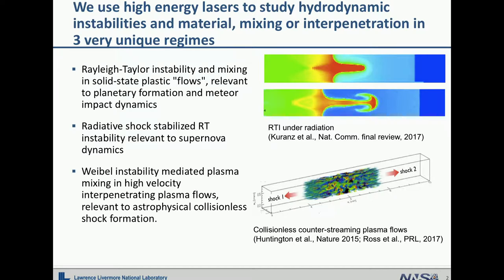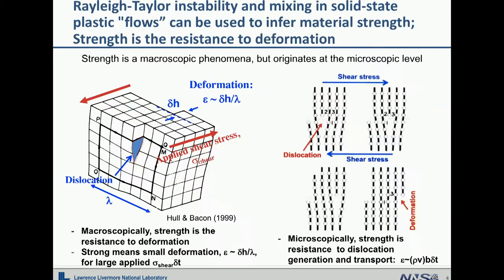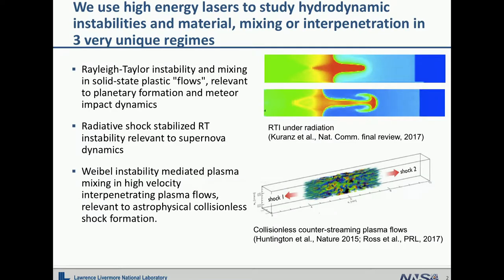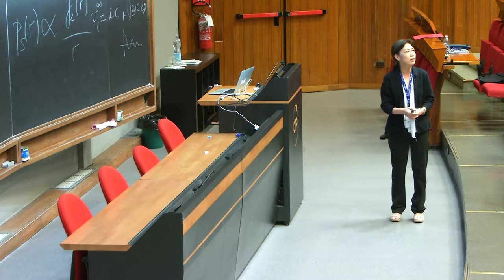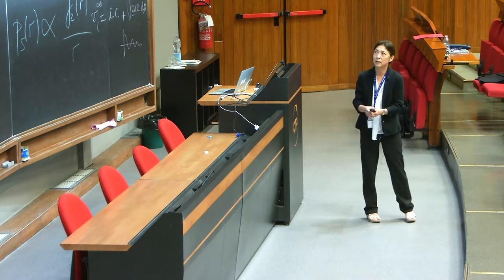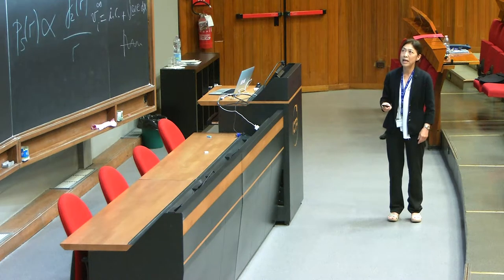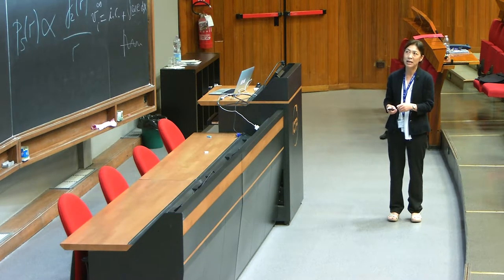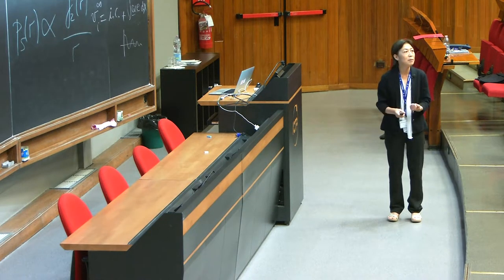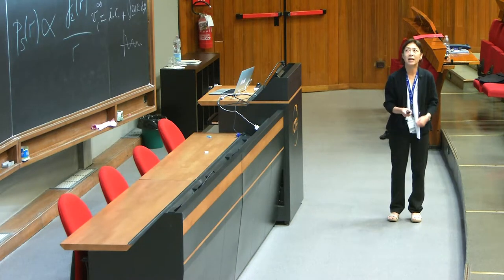One is Rayleigh-Taylor instability and mixing in a solid state, in flows relevant to planetary formation and meteor impact dynamics. Basically we are using Rayleigh-Taylor instability to study material strength. The second topic is radiative shock stability-stabilized Rayleigh-Taylor instability, which may be relevant to supernova dynamics.